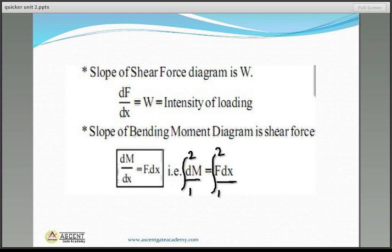The reactions Ra and Rb both equal W/2. At point A, shear force goes from 0 to +W/2, remains constant to point C, then drops by W at C — showing a point load — stays constant from C to B, and returns to 0 at B. This is the shear force diagram for this case.